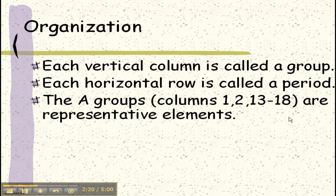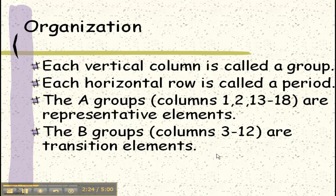These are the ones that follow patterns that we can predict. The B groups are what we call the transition elements. This is what we call the transition metals and the lanthanides and the actinides.